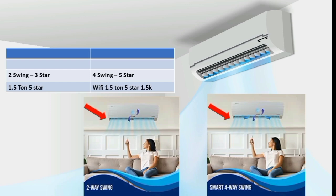This AC is available in 1 ton 3-star and 1 ton 5-star variants. For 1.5 ton, you can also get 3-star and 5-star models. The 1.5 ton 5-star model comes with Wi-Fi support. So if you need Wi-Fi control, you should choose the 1.5 ton 5-star model, which includes Wi-Fi connectivity as an added feature.